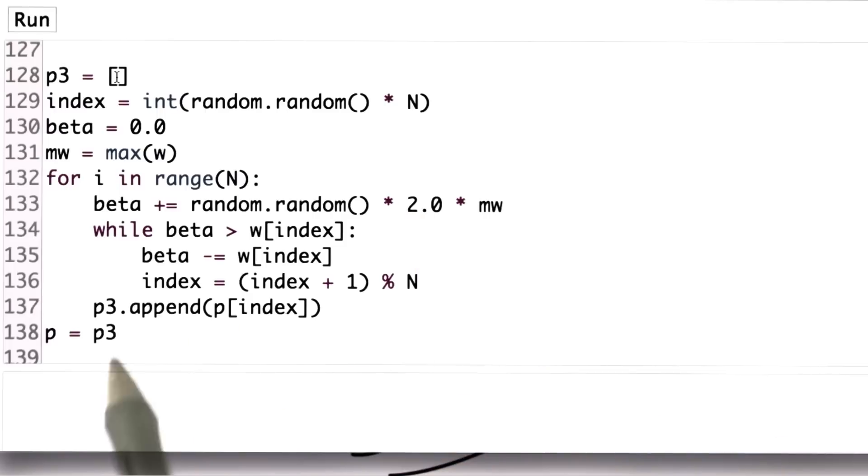And inside this routine, every time I resample, I add a particle from the previous particle set with the index index. So that's the main loop over here. And in the end, I assign P3 back to P.